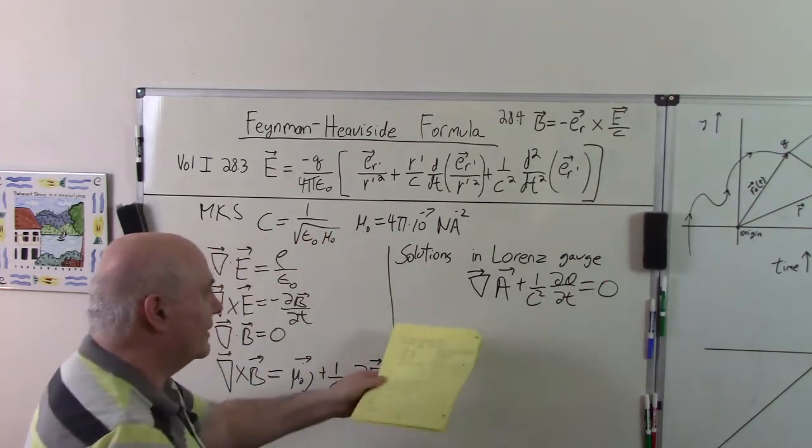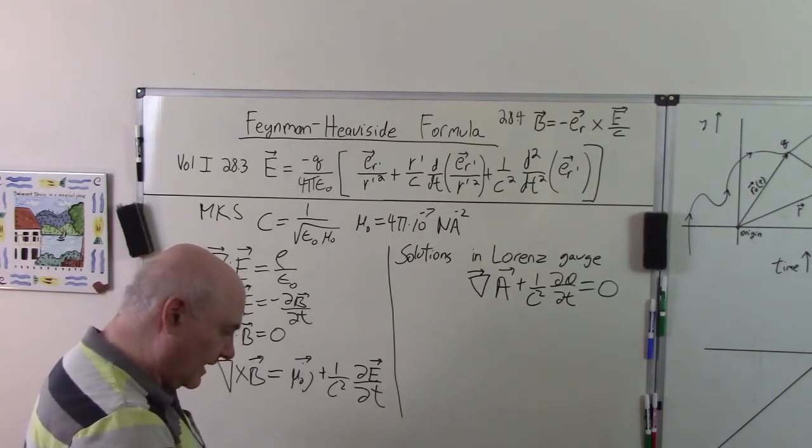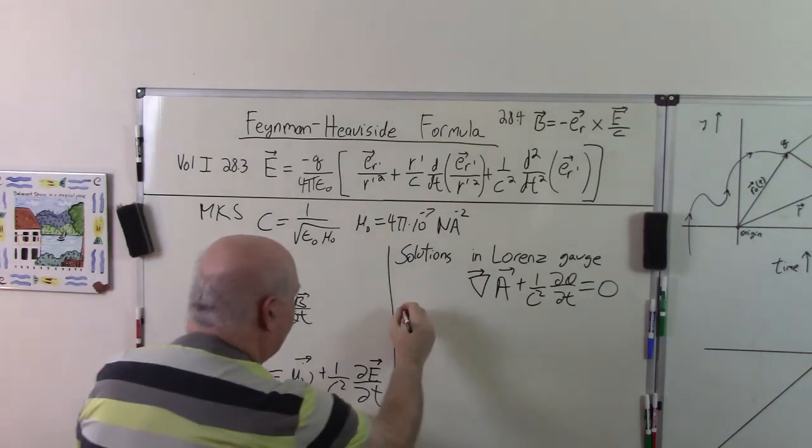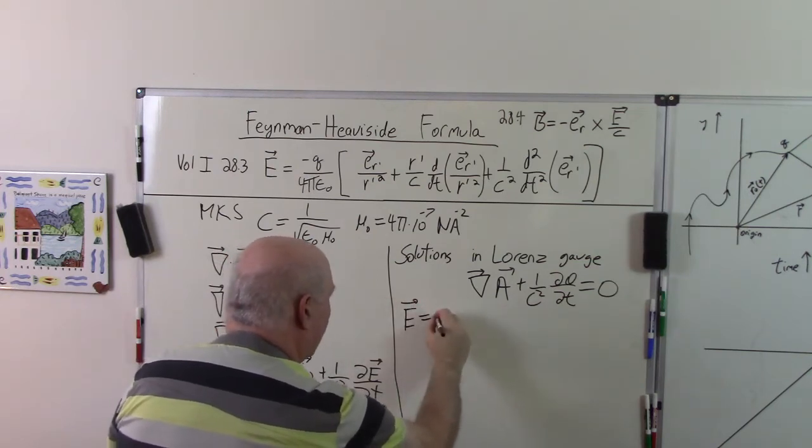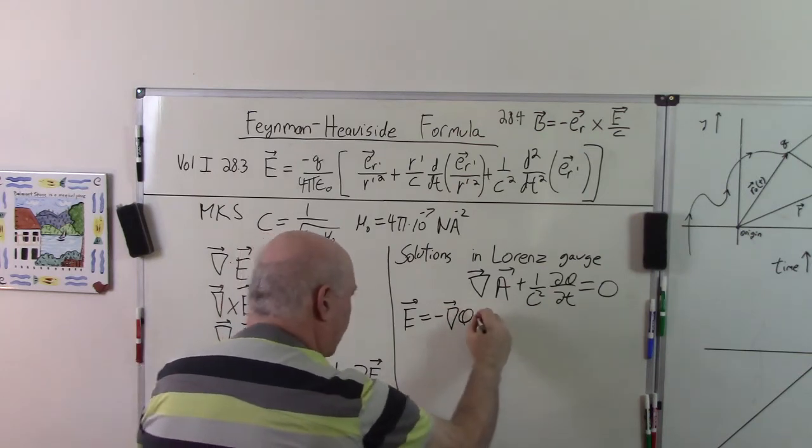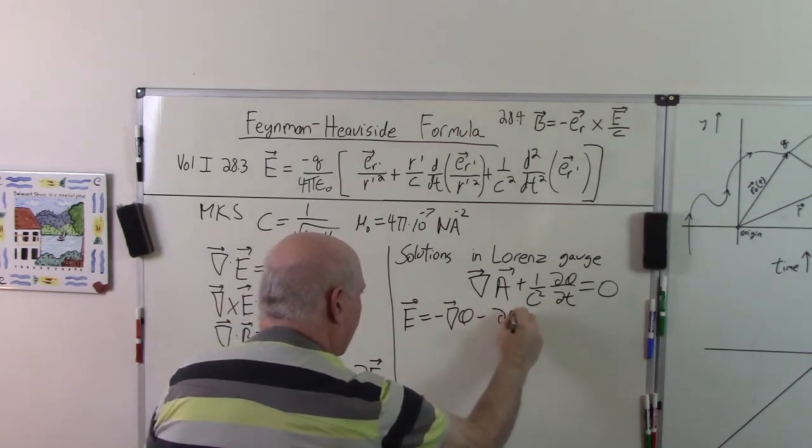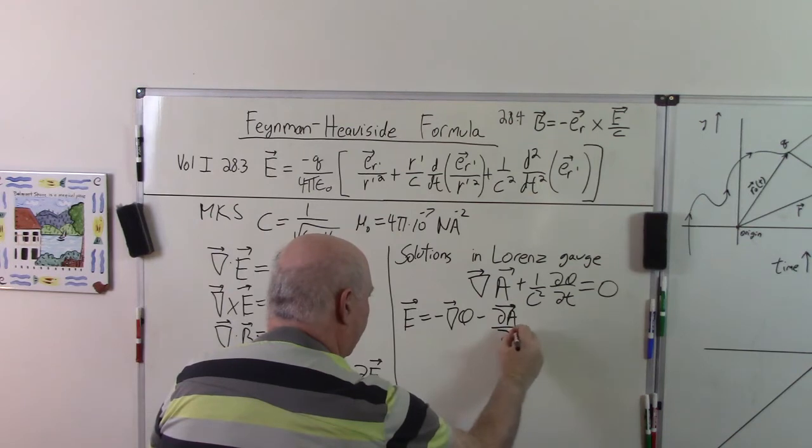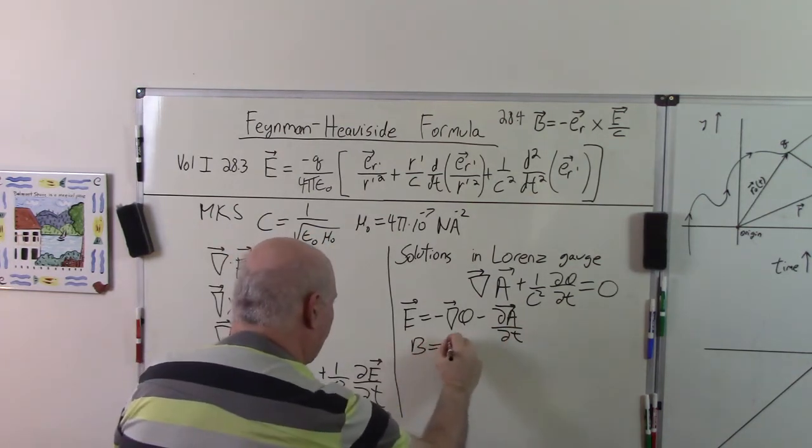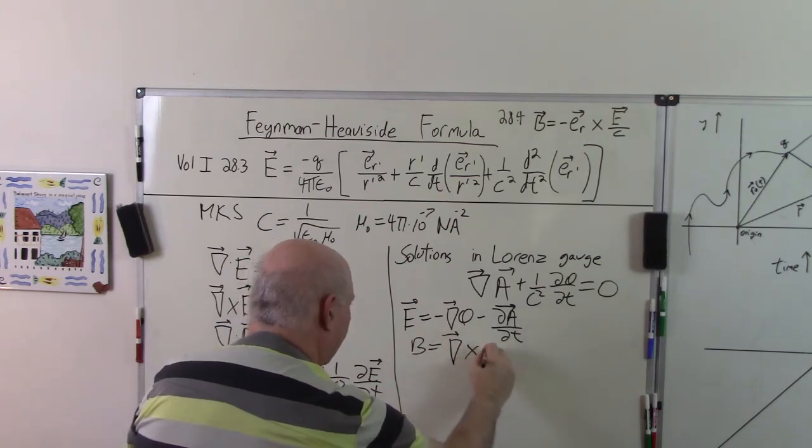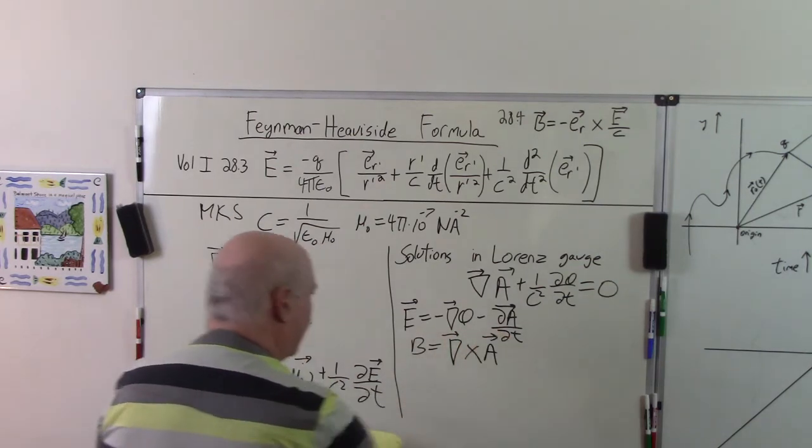And the fields themselves are given by E equals minus del phi minus the partial of A with respect to T, and B is equal to the curl of A.